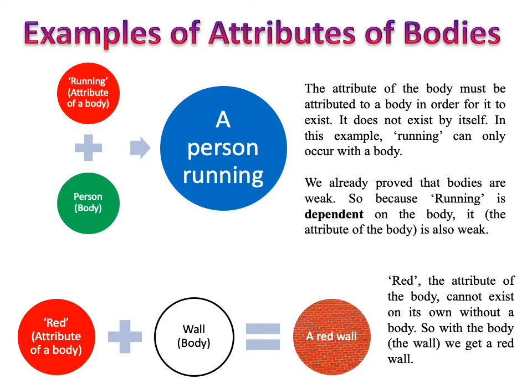So imagine a person is running — what does that mean? That means there is a body, something that occupies a space, i.e. this person, and the attribute of the body which is running. The attribute of the body must be attributed to a body in order for it to exist; it can't exist by itself. So it shows that the attribute of the body is dependent upon the body. That which is dependent is weak, and that which is weak and limited must be creation.